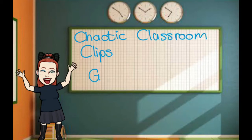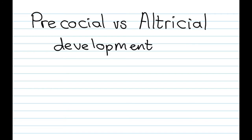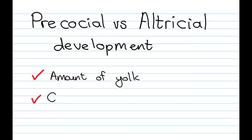Welcome to another chaotic classroom clip. This one is for grade 12 learners following life sciences in the CAPS curriculum. Today's topic is precocial versus altricial development. When you look at precocial and altricial development, there are two things we need to watch out for: the amount of yolk in the egg, and the evidence will also be very visible in the offspring.